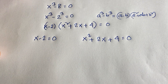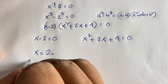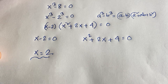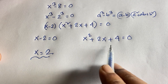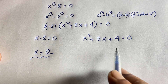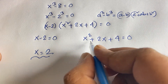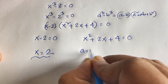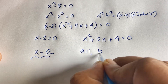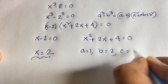From the first case, x is equal to 2. This is our real solution. In the second equation, x squared plus 2x plus 4 equals 0, we find the complex solutions. Here a equals 1, b equals 2, and c equals 4.